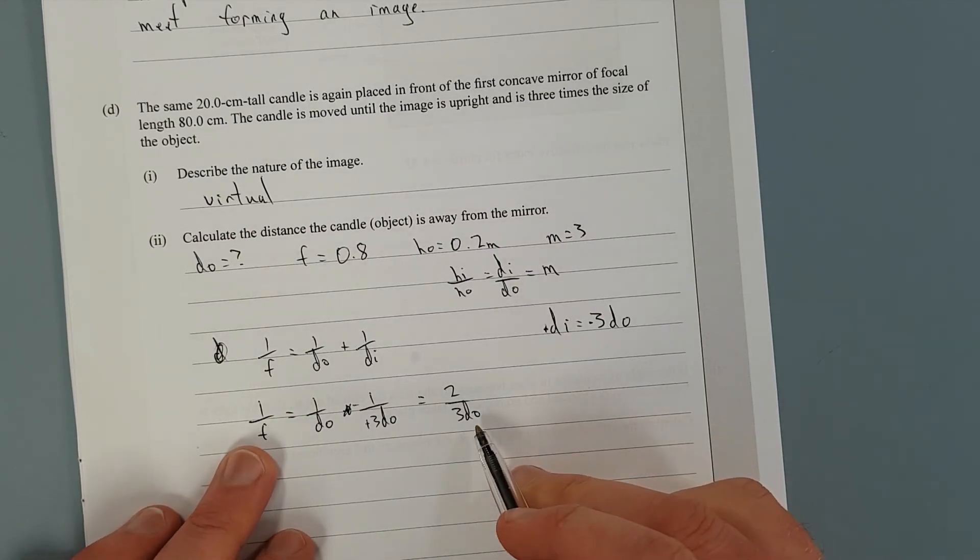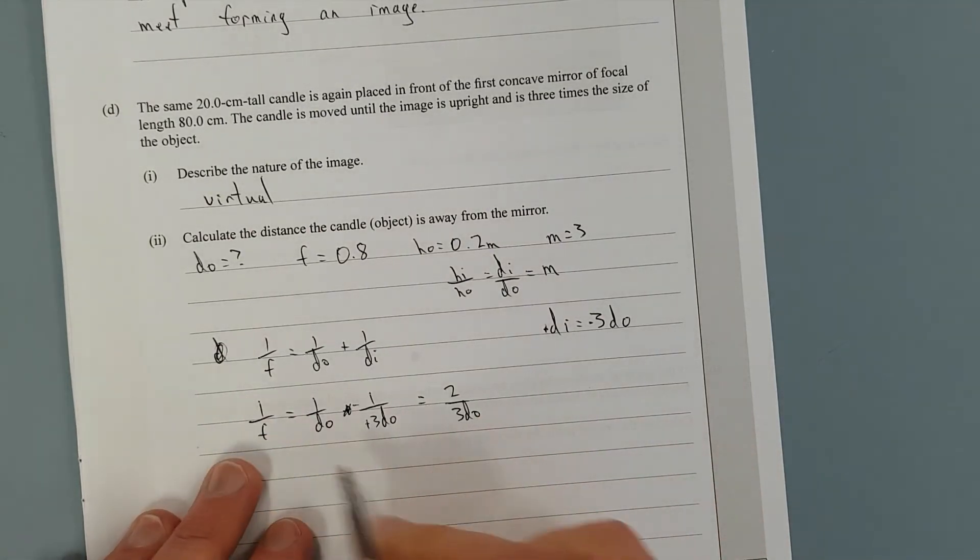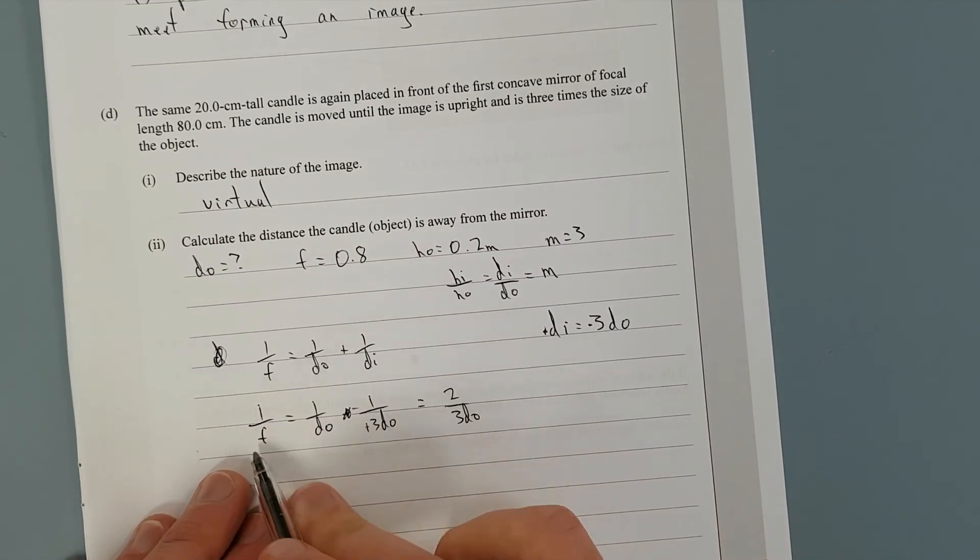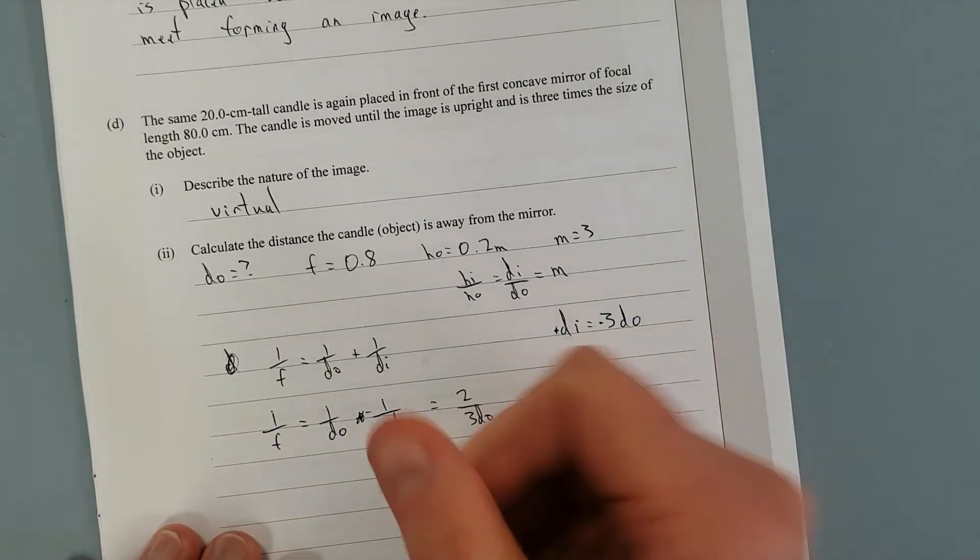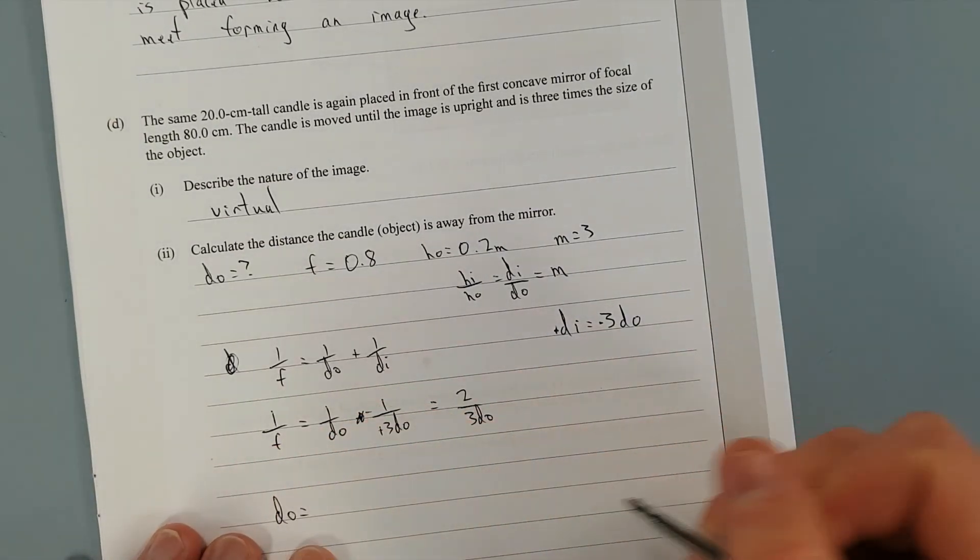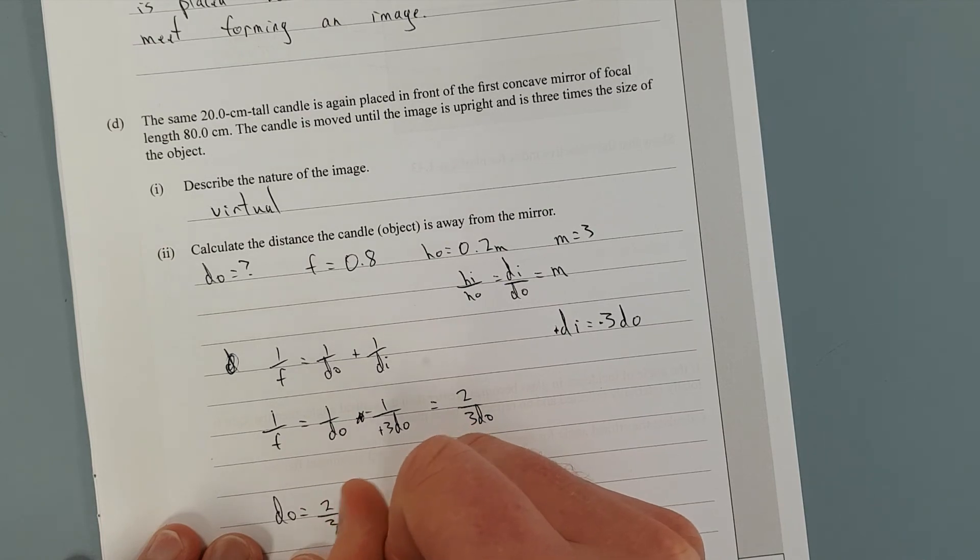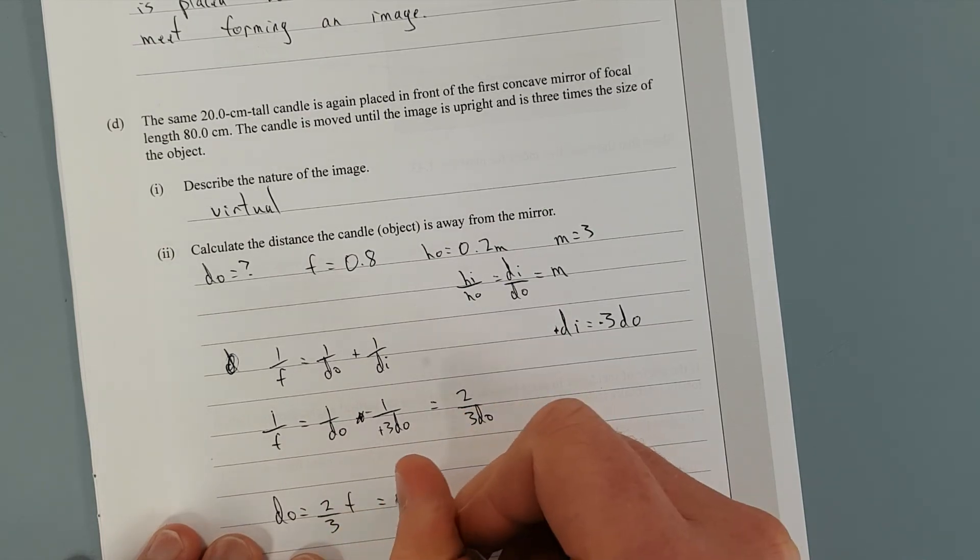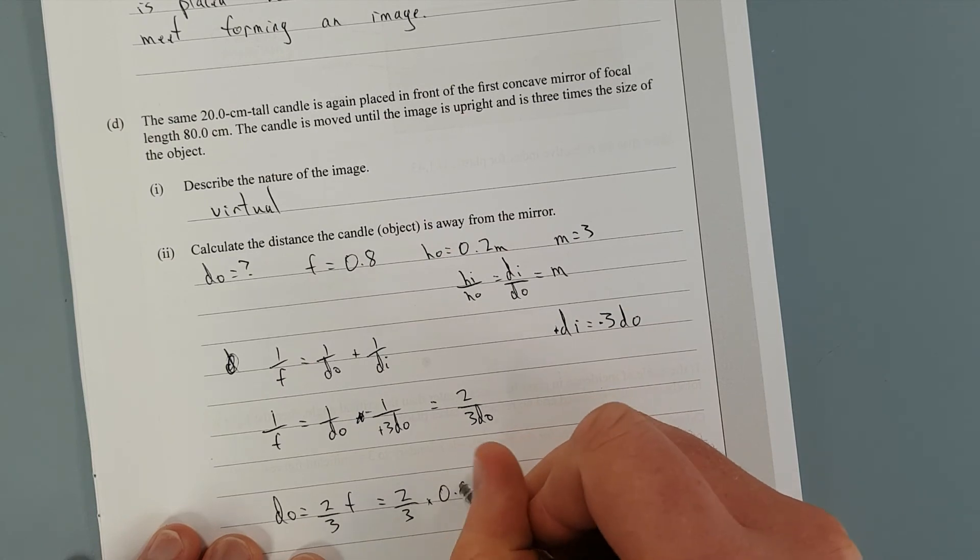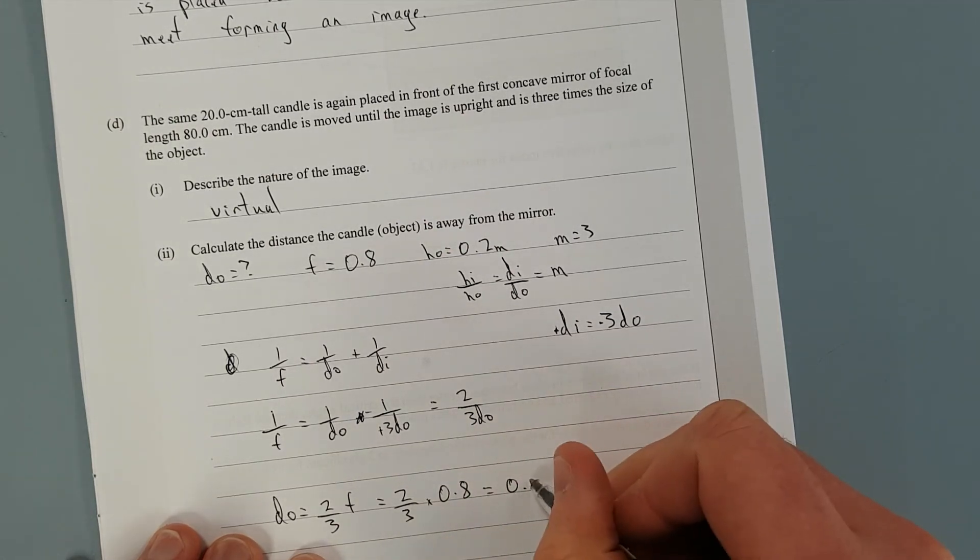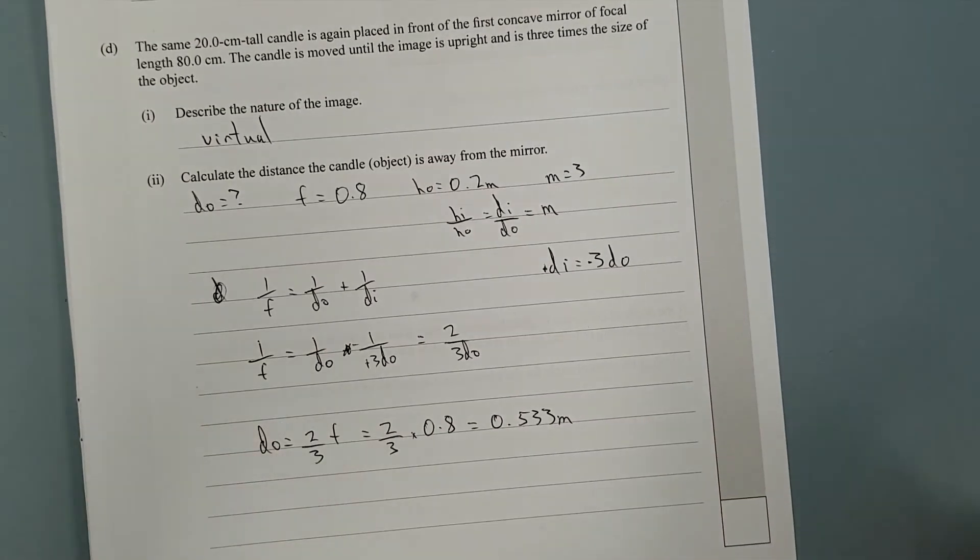And now what we should do is we'll move the DO up on that side and the F up on that side. So we're going to get DO is equal to two thirds times 0.8, which is equal to 0.533 meters. This is quite a tricky algebra question, so you've just really got to muddle around with it until it all fits.